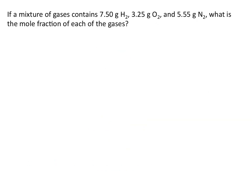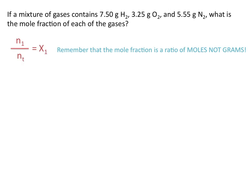Let's look at a problem. If a mixture of gases contains 7.5 grams of hydrogen, 3.25 grams of oxygen, and 5.55 grams of nitrogen, what is the mole fraction of each of these gases? Remember that the mole fraction is a ratio of moles — moles of one gas divided by the total number of moles of all the gases.